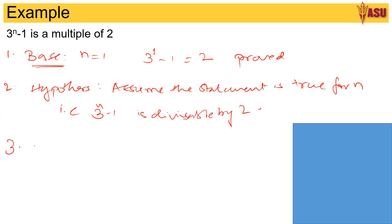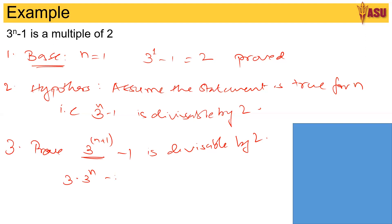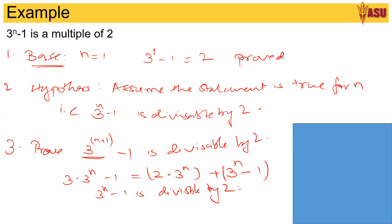Now prove that 3^(n+1) minus 1 is divisible by 2. We write this as 3 times 3^n minus 1. Now 3 can be written as 2 plus 1, so we get 2 times 3^n plus 3^n minus 1. From the hypothesis, we know 3^n minus 1 is divisible by 2, and 2 times 3^n is also divisible by 2.